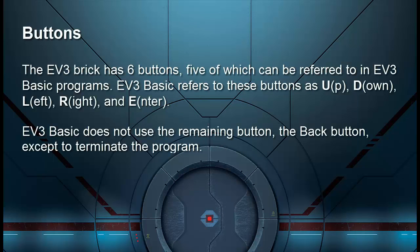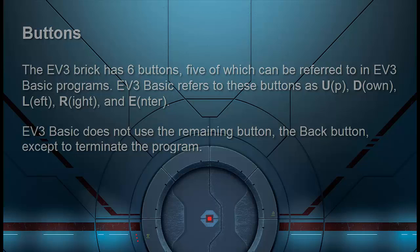The EV3 brick has six buttons, five of which can be referred to in EV3 Basic programs. EV3 Basic refers to these buttons as U for up, D for down, L for left, R for right, and E for enter. EV3 Basic doesn't use the remaining button — the back button — except to terminate the program.